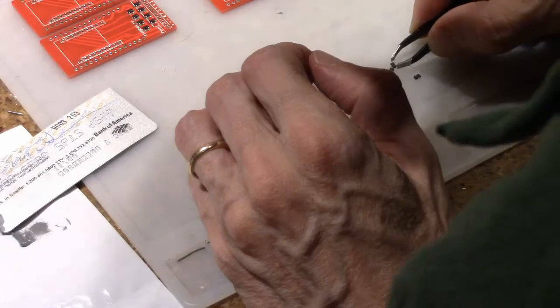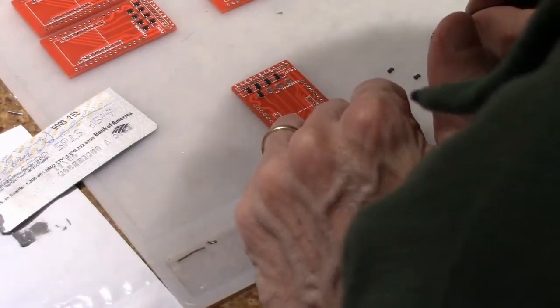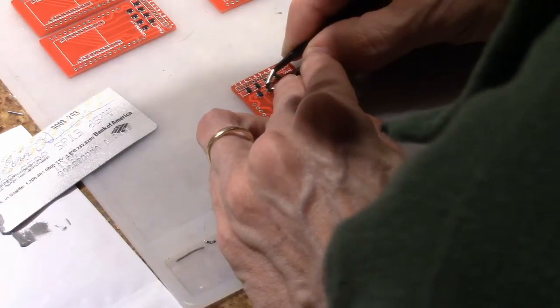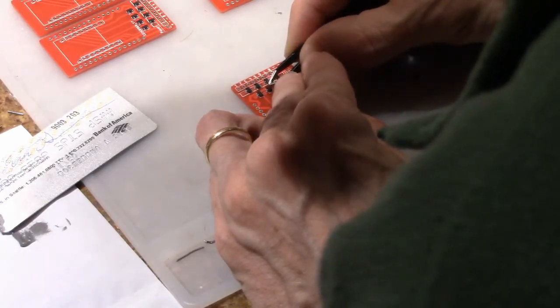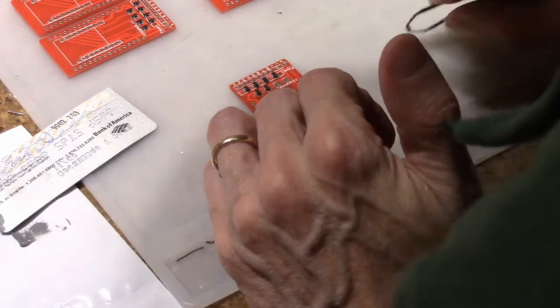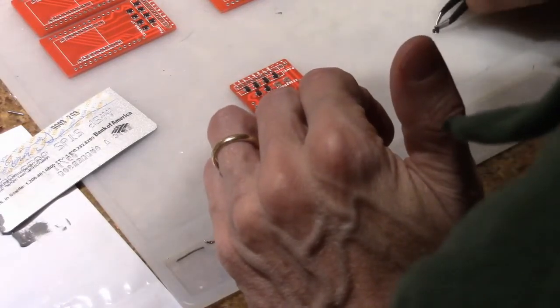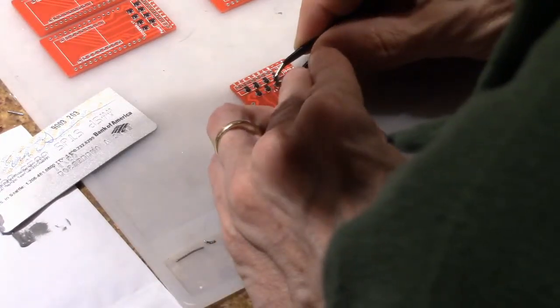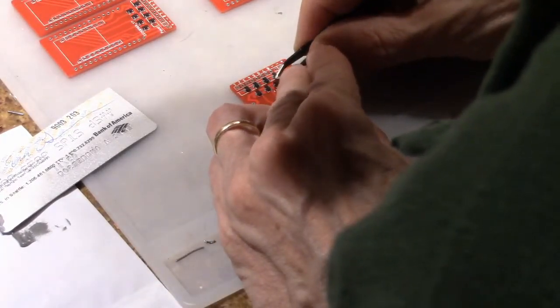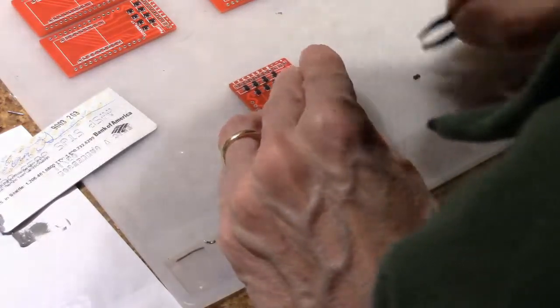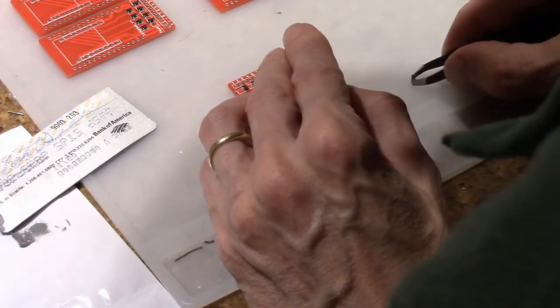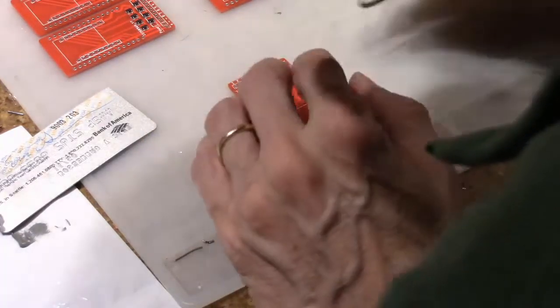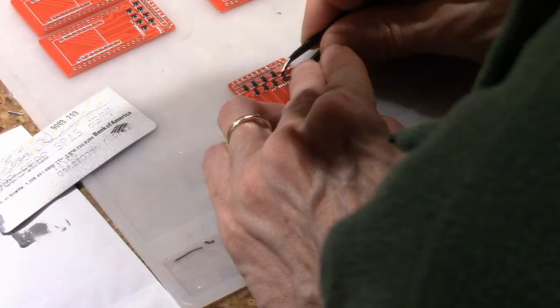Now these components because they're SOT 23s they really aren't that tiny. So what that means is the leads are pretty far apart. So they aren't very challenging to do that well. If you have ones that have tighter components like a lot of leads right next to each other you need a better solder mask and slightly better technique. And you have to be careful much more careful about how much paste you get on.